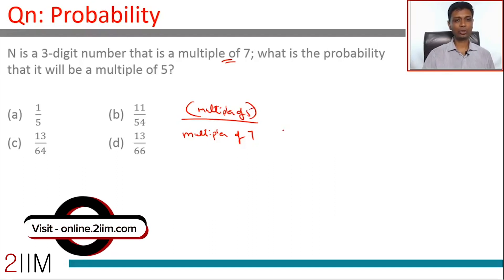So, the denominator is all multiples of 7 which are three-digit numbers. The numerator is, within this list, what numbers happen to be multiples of 5 as well? Or effectively we are saying multiples of 35: the number of multiples of 35 divided by number of multiples of 7. That is all we need to do.